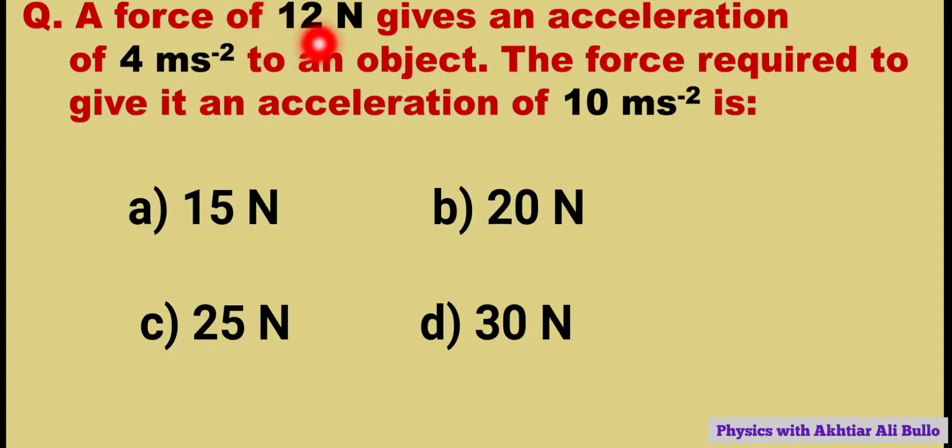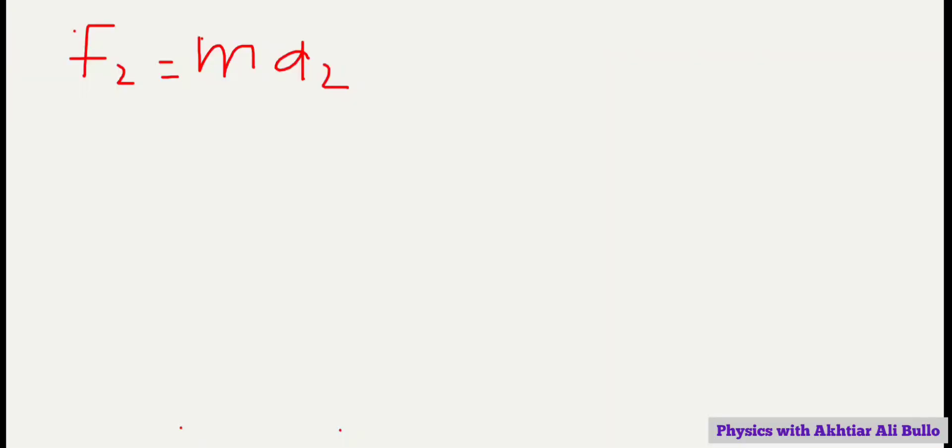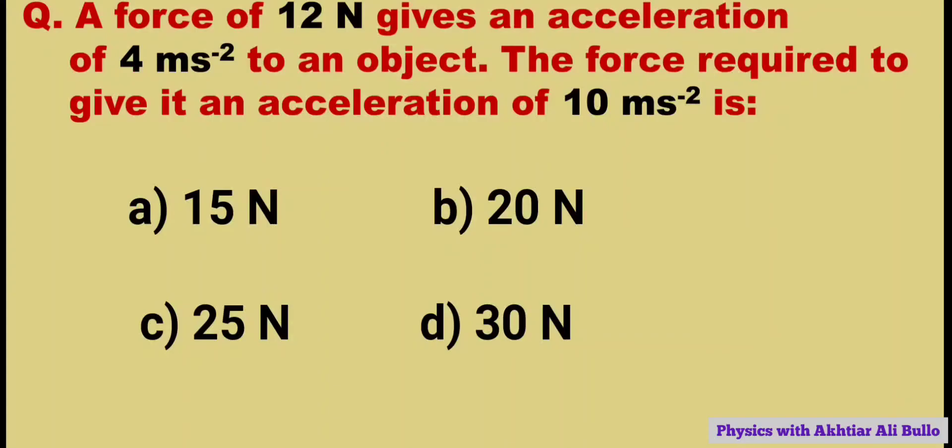F1 is given while we have to calculate F2. So to calculate F2 we will use the formula F2 equals m into a2. We have a2 as 10 meters per second squared, so F2 equals m into 10. We have not obtained mass, so first of all we will calculate mass.